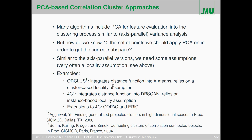ORCLUS is actually the arbitrary-oriented version of PROCLUS. ORCLUS integrates PCA into the k-means algorithm, and 4C is the variant of PRECON which integrates PCA-based distance learning into DBSCAN. ORCLUS is the extension of PROCLUS, and 4C is the extension of PRECON. There are other extensions to 4C — COPAC, ERIC, and more — but we will have a look at ORCLUS and 4C.